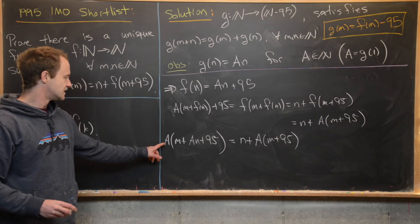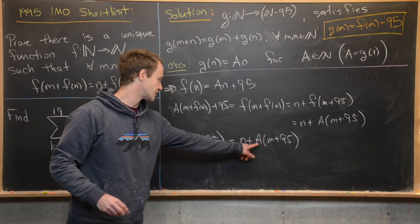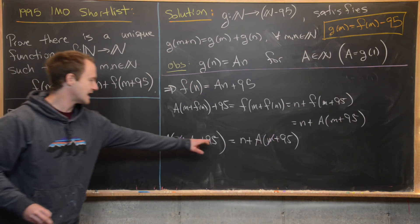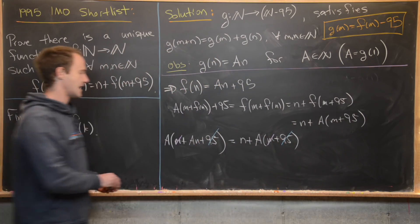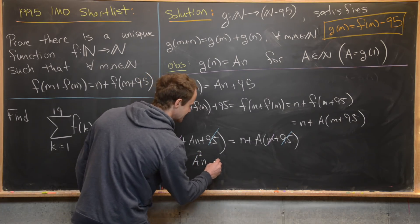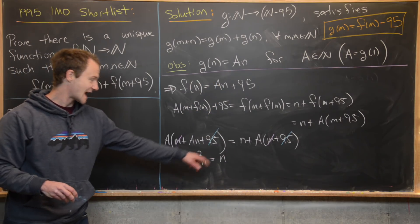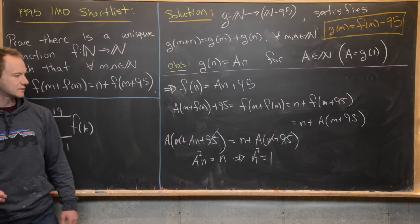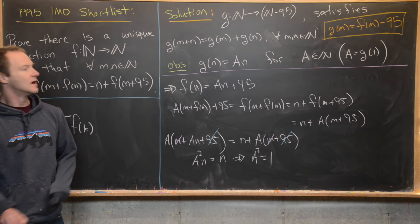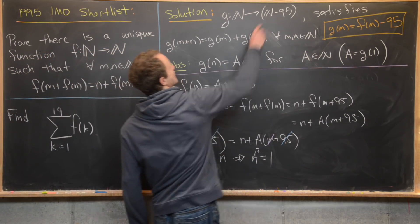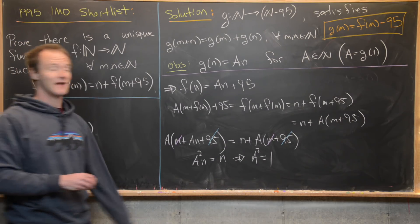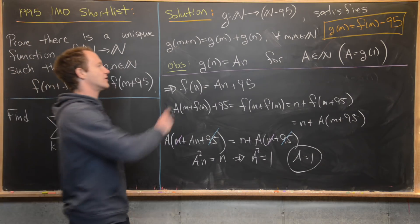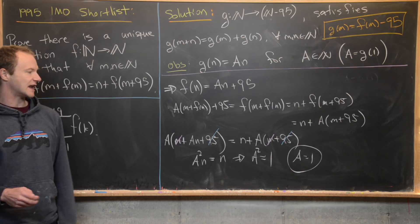Expanding and canceling the a·m terms and the a·95 terms from both sides leaves us with a²·n = n. This must hold for all natural numbers n, including n = 1, so a² = 1, meaning a = 1 or a = −1. Since g(n) must land in the natural numbers minus 95, we need a = 1 (a = −1 would give g(1) = −100, which is not in the codomain). Therefore a = 1.